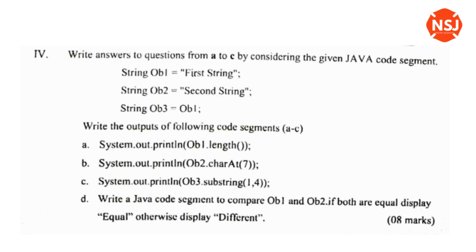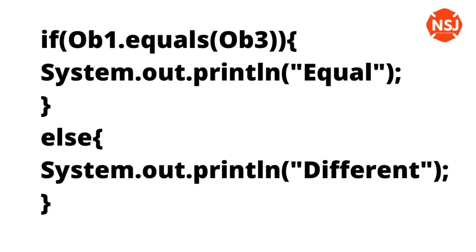We are going to compare object ob1 and ob2. If both are equal, display 'equal'; otherwise display 'different'. You can compare objects using ob1.equals(ob2). If ob1.equals(ob3), then call System.out.println to display equal or different.